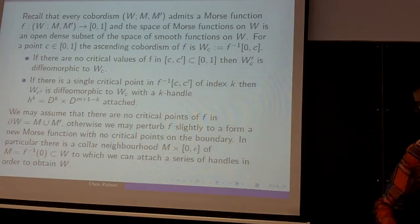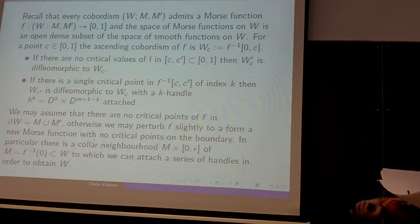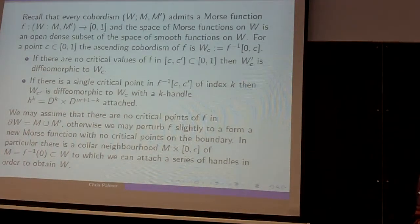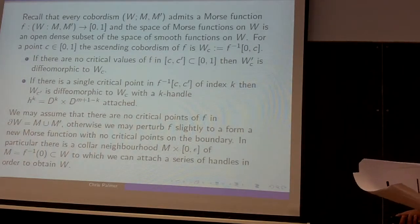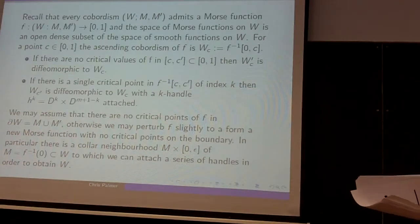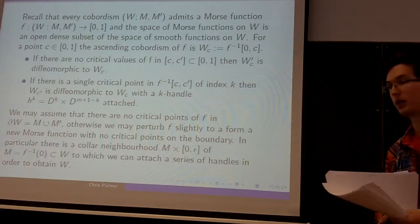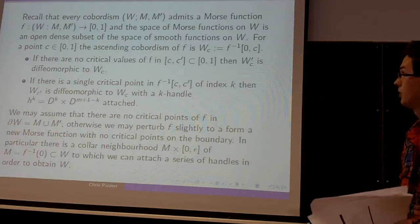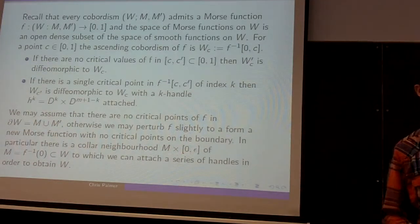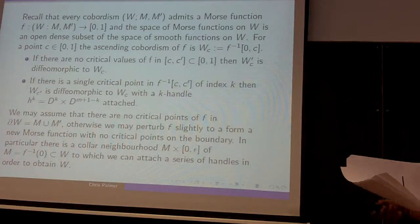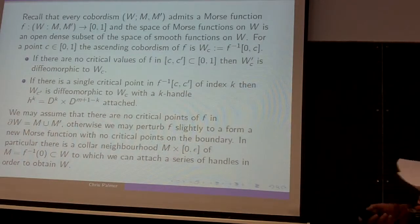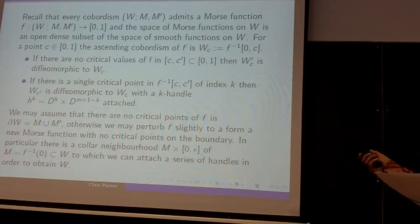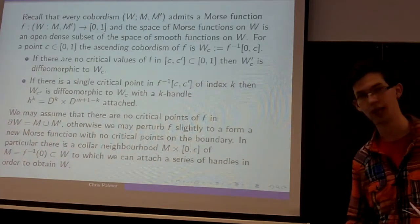So now we're going to start the long process of the proof of the H-cobordism theorem. This is done by handle decompositions. Recall, the idea was you have your Morse function on your cobordism. These Morse functions always exist and they have nice properties like they form an open, dense subset of the set of all smooth functions on our cobordism. And we could introduce the notion of the ascending cobordism. We take some point C in our codomain [0, 1], and we can look at the pre-image of the closed interval [0, C] under F. And this gives us something called the ascending cobordism.